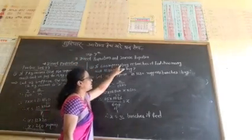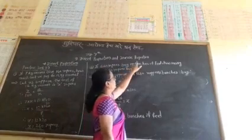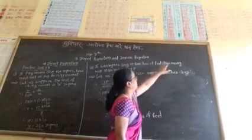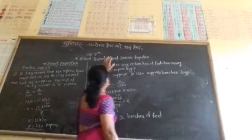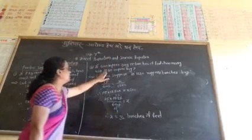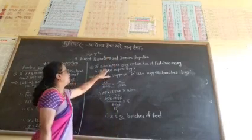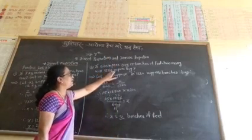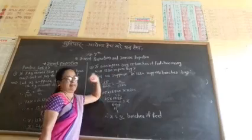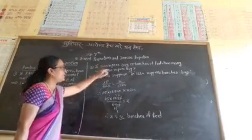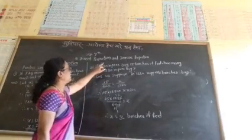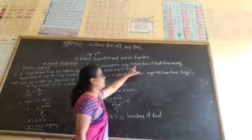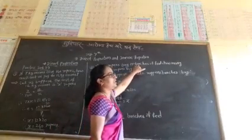Second example: if 600 rupees buys 50 bunches of fare, how many bunches of fare can we get for 1,180 rupees?